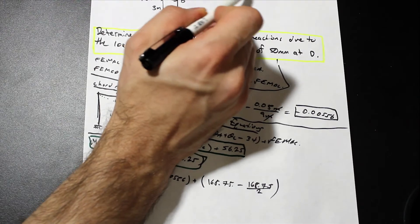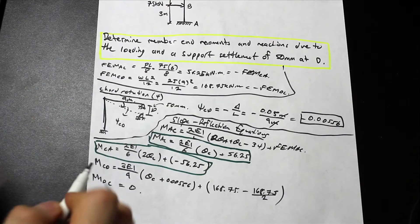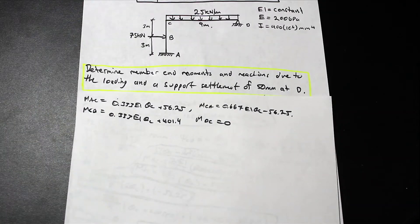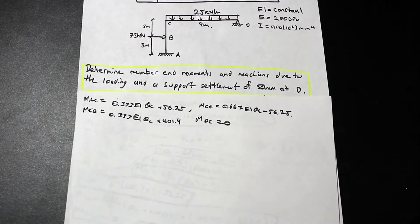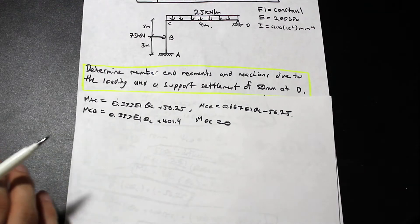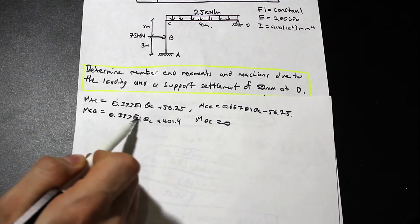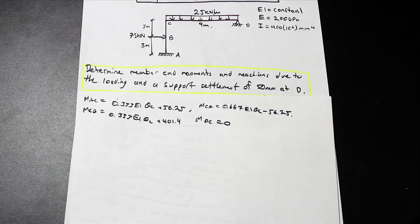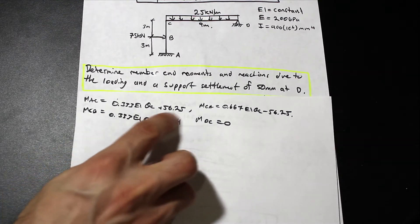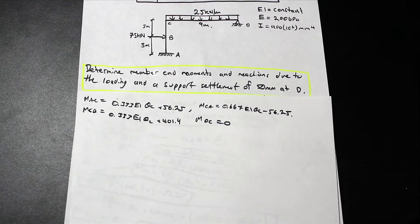So we have four slope deflection equations total. I've gone ahead and rewritten and simplified them — I suggest you do that on your own and use these as a guide. For MCD, remember you need to substitute the EI value into the bracketed term and multiply it out, as that affects the constant number at the end.